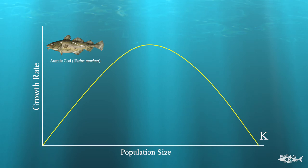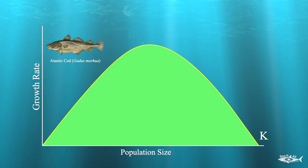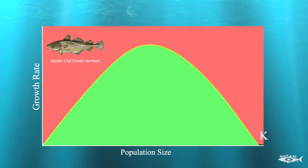Most importantly, the parabola shows us how much cod we can take if we do not want to change the population size. If the population is a given size, we know it will grow about that much in one year, so we can fish that amount without changing the population. If we fish below the curve, the population will have increased in size the next year — it is underexploited or underfished. If we fish above the curve, the population will have decreased — it is overexploited or overfished.